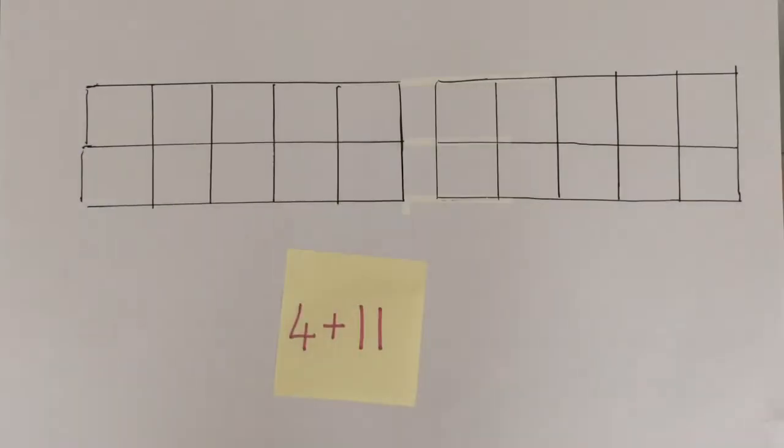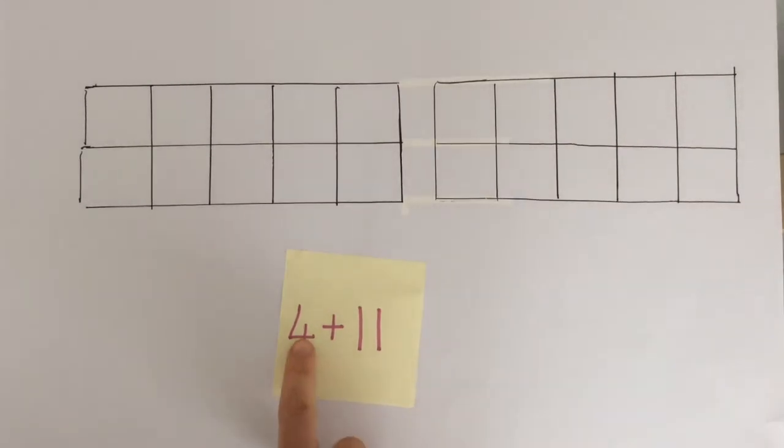So 13 add 2 equals 15. Let's try another. 4 add 11. Thank you Belle. So again we've got to look at the two amounts and pick the largest amount to start with when we're doing an addition problem. So the largest amount is 11.